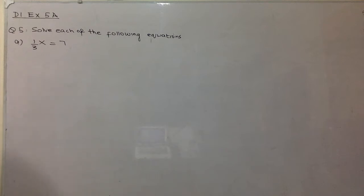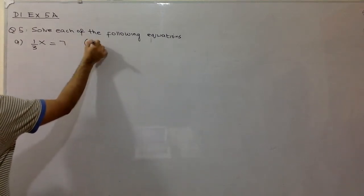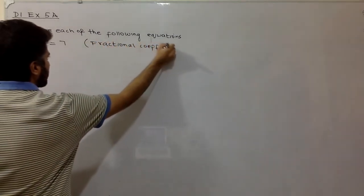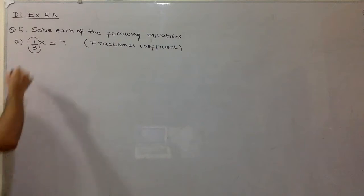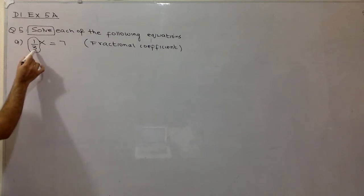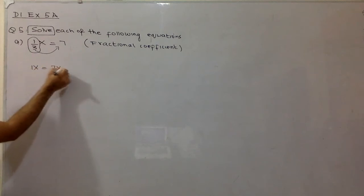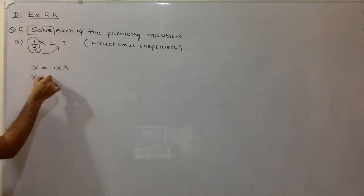When you have to solve this type of equation, this is one where you have a fractional coefficient — the coefficient is a fraction. You need to find the value of the variable, which is x. So you need to get rid of this 3. It is dividing x right now, it is in the denominator, so you can move it to the right side. 1x will become 7 multiplied by 3, giving you x equal to 21.